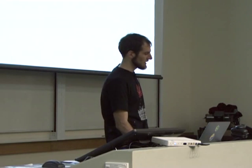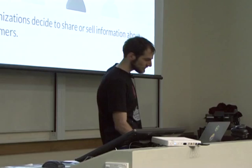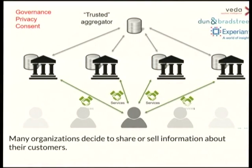Many organizations have decided that some non-trivial amount of their customers' information is worth sharing. The cost-benefit analysis obviously comes down on the side of selling or sharing customers' data quite often. So between two or more organizations, how is that done today? When organizations decide to share data they bring it together, and more often than not they use an intermediary such as Veda or Experian to act as trusted third parties. And there are some restrictions which some organizations sometimes obey — governance, legal requirements, their own privacy policies, and consent from users.